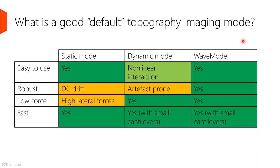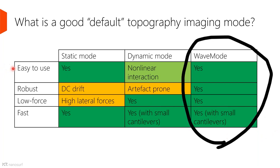This is admittedly my biased interpretation of things, but the main things you might be concerned about are: is it easy to use? Is it robust? Can I image gently without causing problems on my sample? And do I have to spend a long time getting an image? What's great about wave mode is the answer to all of those questions is really yes. In comparison, static mode has limitations like high lateral forces, and dynamic mode can be hard to understand because of resonance interactions and artifacts.